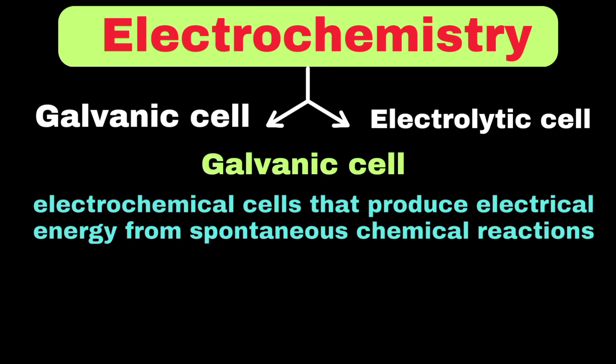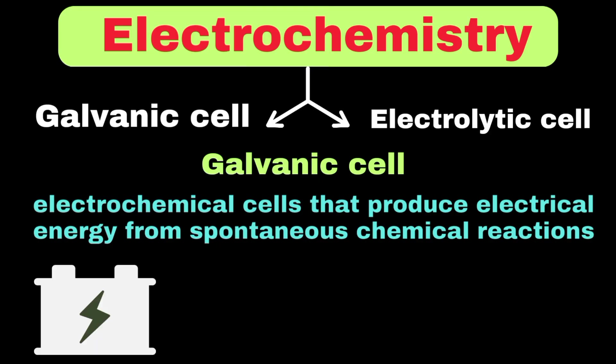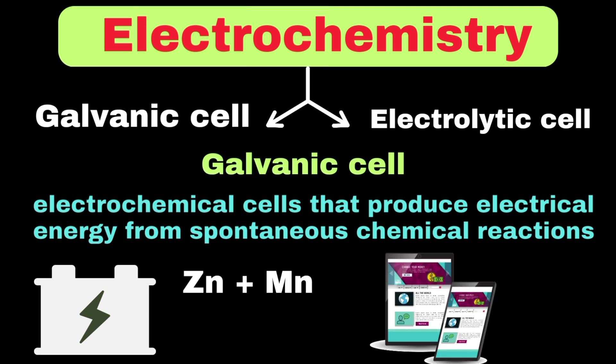To understand this, let's take the example of a simple battery. In a typical alkaline battery, zinc metal reacts with manganese dioxide, creating a flow of electrons through the circuit. This flow of electrons is what powers our electronic devices.